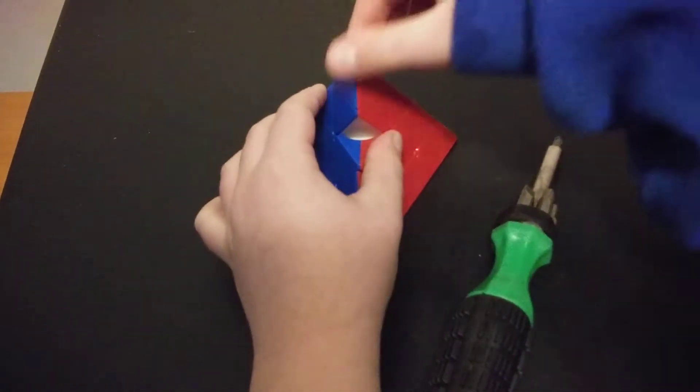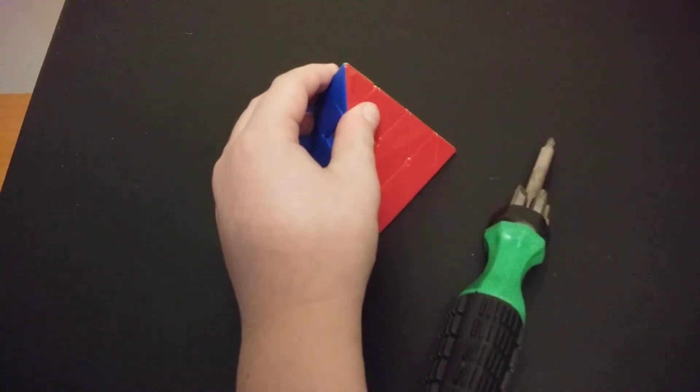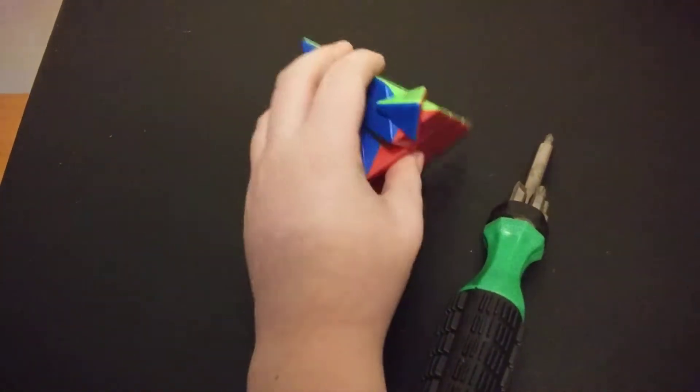The first step in fixing a pop on a Master Pyraminx is to turn a tip 45 degrees. Well, no, not 45 degrees, but whatever. Turn a tip halfway, like that.